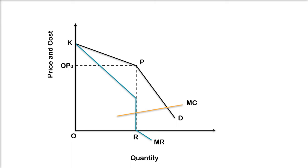On the other hand, if the seller reduces the price of the product below OP0, his rivals will also reduce their prices, and though he increases his sales, his profit would be less than before. The reason is that the PD portion of the KPD curve below P is less elastic and the corresponding part of the marginal revenue curve below R is negative. Thus, in both the price-raising and price-reducing situations, the seller will be a loser.